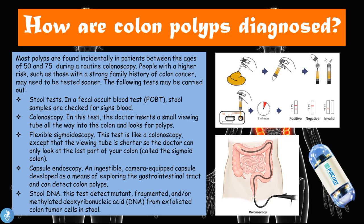The first diagnostic test is the fecal occult blood test or FOBT, where stool samples are checked for signs of blood. Our stool normally contains no blood, but if blood is present it could indicate — among other things — the presence of a polyp.